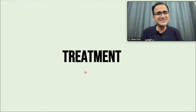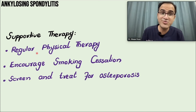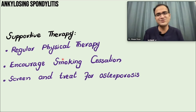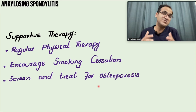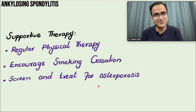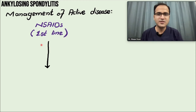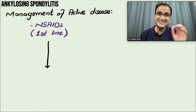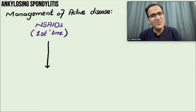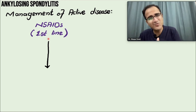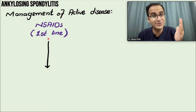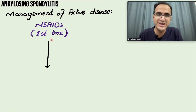Treatment begins with supportive therapy: regular physiotherapy is very important as pain improves with physical activity. Encourage smoking cessation and screen and treat for osteoporosis, which is common as immobilization increases fracture risk. For active disease, NSAIDs are first-line treatment. Patients commonly report that ibuprofen, naproxen, piroxicam, or diclofenac improve their pain, but pain returns when stopped.